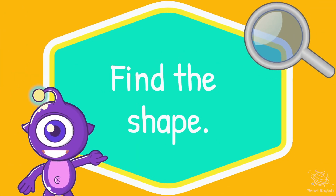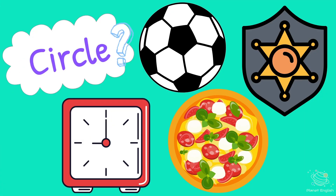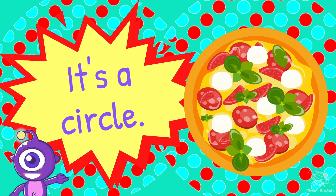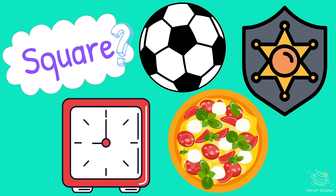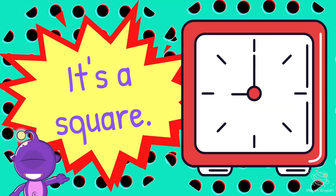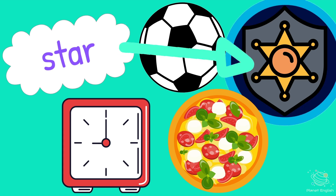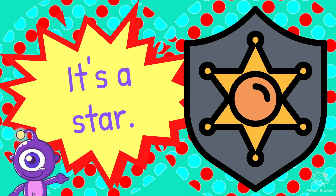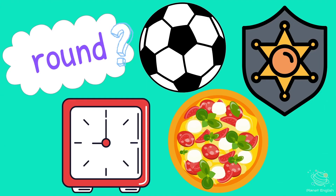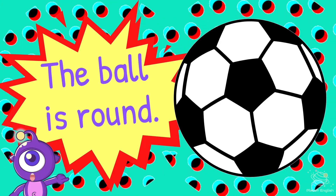Now find the shapes. Which is a circle? It's a circle. Which picture is a square? It's a square. Which is a star? It's a star. Which is round? The ball is round.